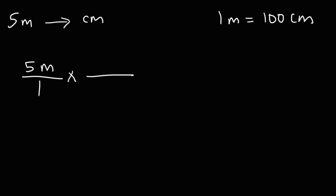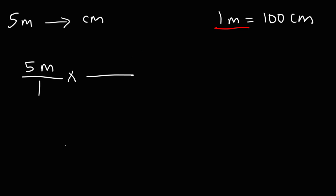Now, in the second fraction, we need to determine what to write. There are two parts to the conversion factor. One part is going to go on the top, and the other part is going to go on the bottom. Let's start with the 1 meter portion — should we place it on the top or on the bottom? We want to put it on the bottom because we want the unit meters to cancel.